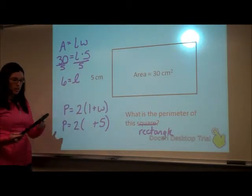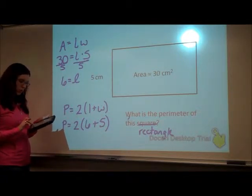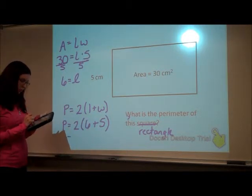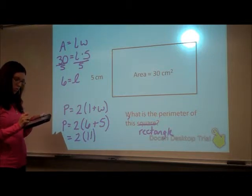Well now I can use that down here in my perimeter formula. So in place of the L, I'm going to put 6. Order of operations, add those first. 6 plus 5 is 11. Multiply that by 2, and I get that the perimeter is 22.